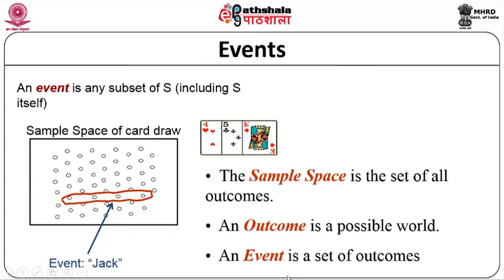Having understood what a sample space and outcome are, let us get to know what is an event. An event is any subset of S — the whole set itself may be considered as a subset of S. For example, from a deck of cards, from the sample space we can identify a set of outcomes. It can be an event where we are selecting a card associated to Jack — those four outcomes which are part of my sample space will be treated as an event. So: sample space is a set of outcomes, an outcome is a possible world, and an event is a set of outcomes.